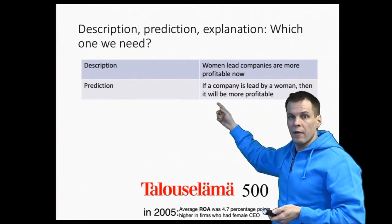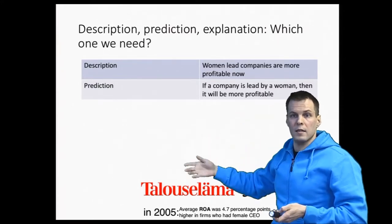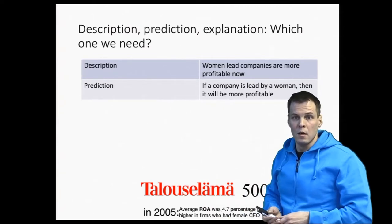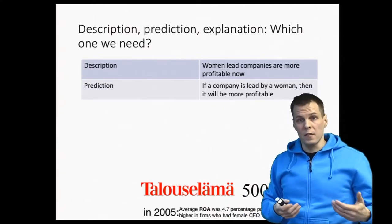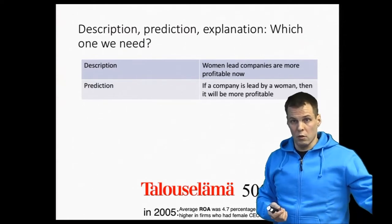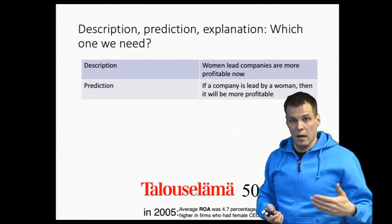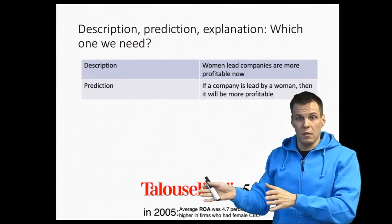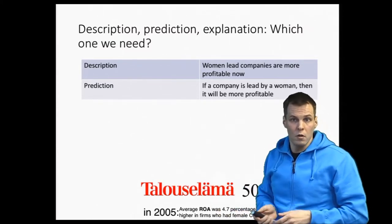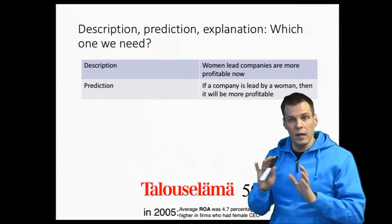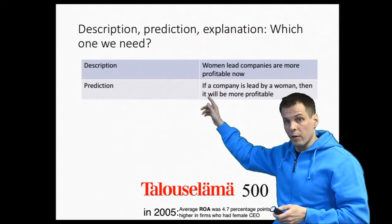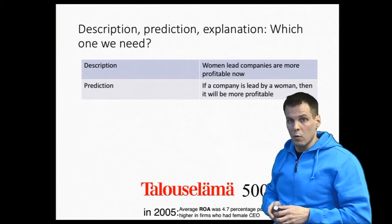Predictive analytics is very useful. We do forecasting and predictions all the time. You watch the weather forecast; banks predict who is going to pay their mortgage on time and who's going to be late; investors try to forecast where the stock market goes, and so on. So prediction without any claims about causality is very useful, but that's not very common in quantitative research.